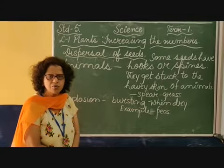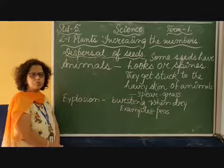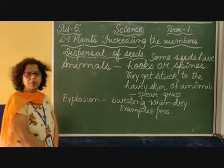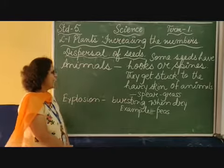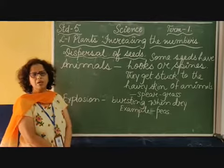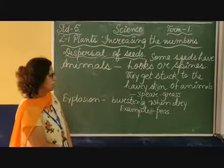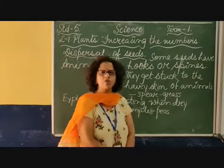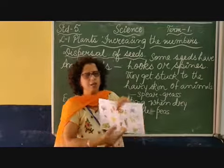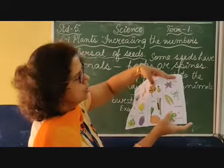The last agent is explosion. Explosion means not a big explosion — it is bursting. You must have seen pods; when they are dry, they burst open and the seeds shoot out from there to another place. Even peas also happens like this. So bursting of seeds when they are dry is another way seeds are dispersed.